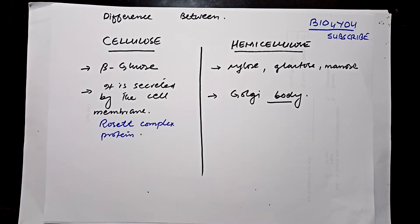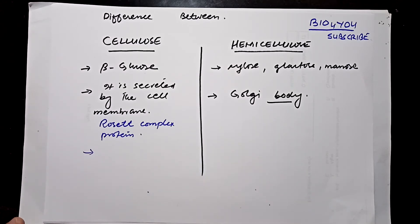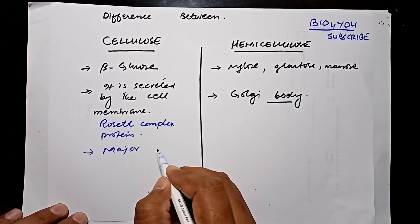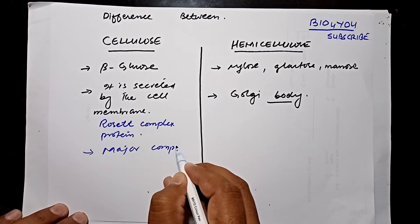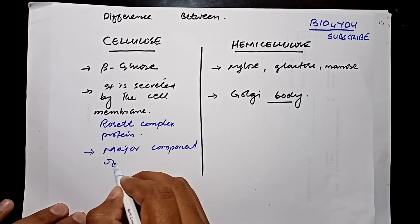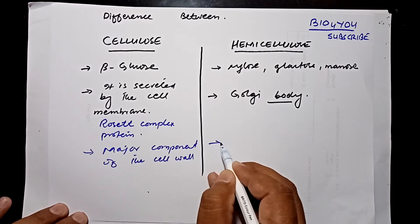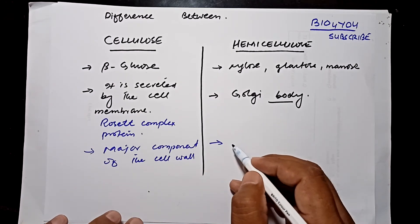So as far as secretion is concerned, cellulose is secreted by the cell membrane and hemicellulose is secreted by the Golgi body. The third difference relates to their role in the cell wall. Cellulose is the major component of the cell wall.